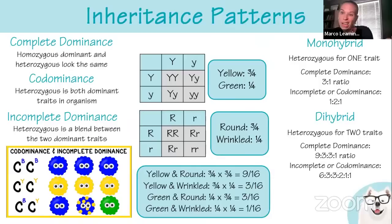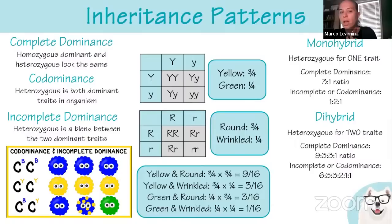These questions can be given in multiple different ways: a chi-square question, asking for the probability of a certain trait, asking for the number of individuals with a certain trait, or if given a certain number of offspring, how many have a specific trait. There are a lot of different ways they can ask these questions.